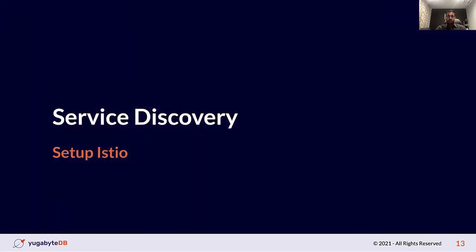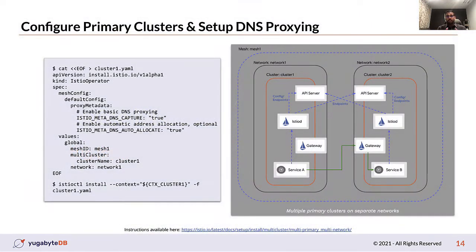For service discovery, I'm using Istio's multi-primary multi-network setup. The steps require you to install the Istio control plane on all clusters participating in the multi-cluster setup, and you have to mark each cluster as a primary cluster. With the 1.8 release of Istio, they introduced a concept of DNS proxy. While Kubernetes provides DNS resolution for Kubernetes services out of the box, any custom service entry is not recognized. With the 1.8 release, service entry addresses can now be resolved with the Istio sidecar itself, so you don't require any custom DNS server configuration. You will need to repeat these steps for each cluster participating in this configuration.